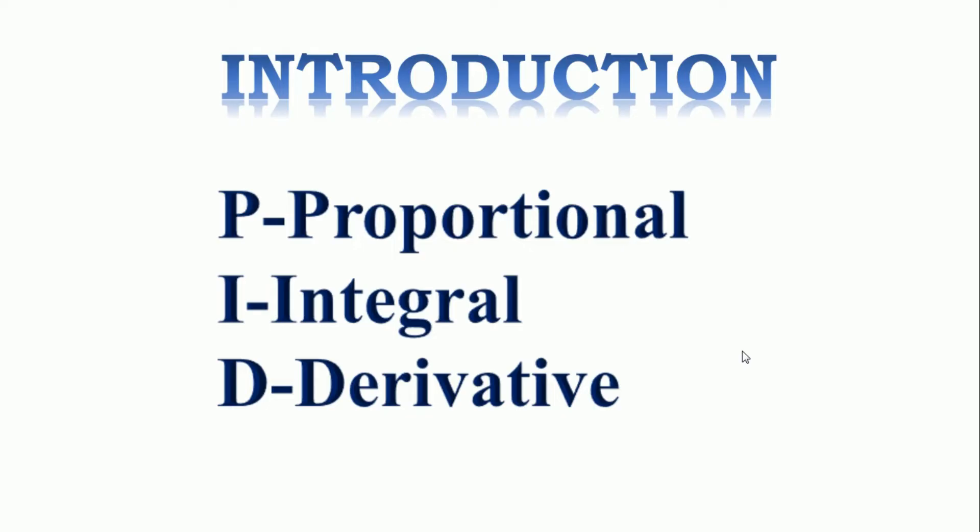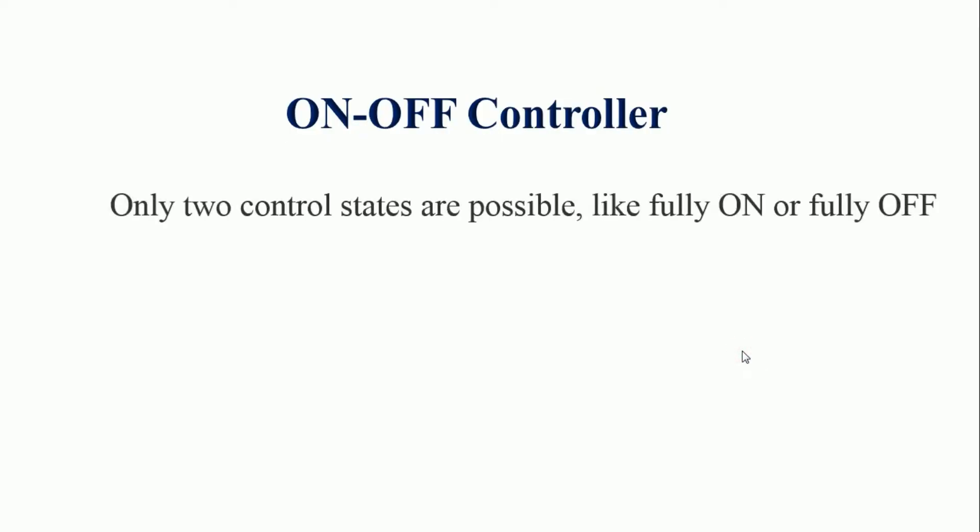Let us see working of PID controllers. With the use of low cost, simple on-off controller, only two control states are possible, like fully on or fully off. It is used for limited control applications where these two control states are enough for control objective. However, oscillating nature of this control limits its uses, and hence it is being replaced by PID controllers.